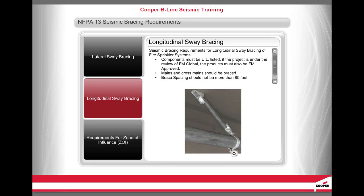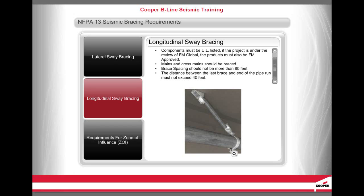The distance between the last brace and end of the pipe run must not exceed 6 feet. For longitudinal sway bracing of fire sprinkler systems: Components must be UL listed, and if the project is under review of FM Global, products must also be FM approved. Mains and cross mains should be braced. Brace spacing should not be more than 80 feet. The distance between the last brace and end of the pipe run must not exceed 40 feet.